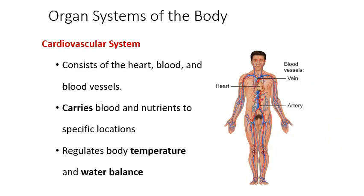The cardiovascular system includes your heart, blood vessels, and the blood itself. The point of your cardiovascular system is to carry blood and nutrients all around the body. In doing so, it also carries heat around the body — moving blood to areas that are colder to help warm them up, or dilating vessels to radiate heat off in certain areas.